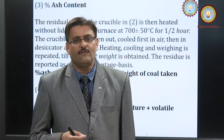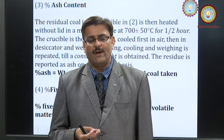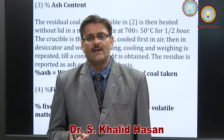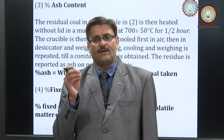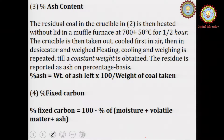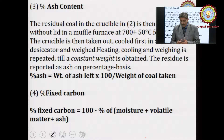Ash content is the incombustible material left behind after burning. The coal is heated at about 700 degrees Celsius for one and a half hours. The remains left behind, which are incombustible, are weighed and ash content is calculated by the formula: (weight of ash left × 100) / amount of sample taken. Fixed carbon percentage is then calculated by subtracting moisture content, ash content, and volatile content from 100.